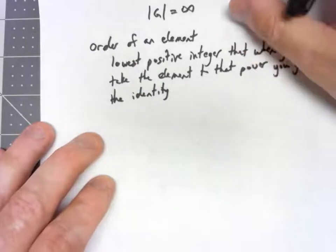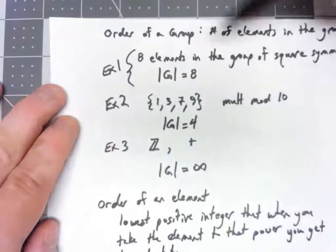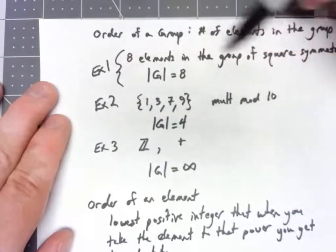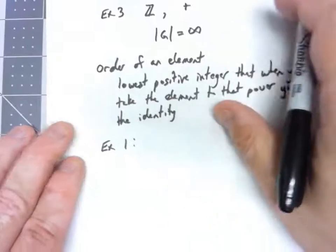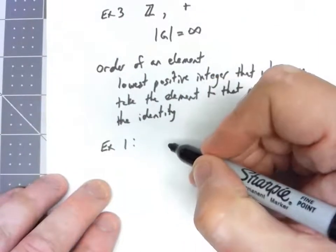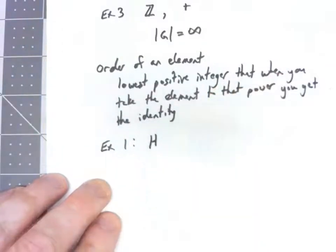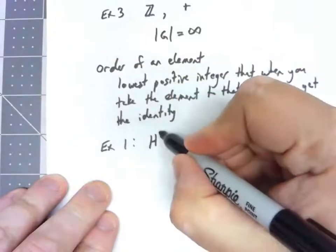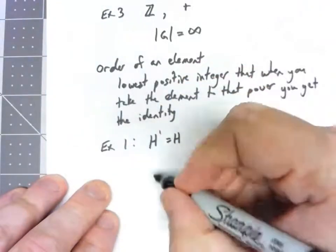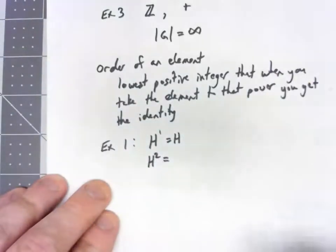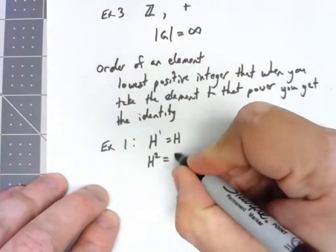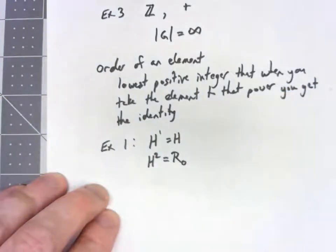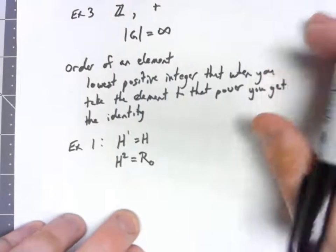So let's actually just do a few examples from each of these groups that we mentioned. Let's start with that group of square symmetries. If we take that group, one of the things we had was a reflection across a horizontal line. Well, certainly h to the first is just h. But if we do h squared, we flip it across that horizontal line, and then flip it across that horizontal line again, you're back to the starting position. You have the identity, which in that case was rotation by zero degrees.